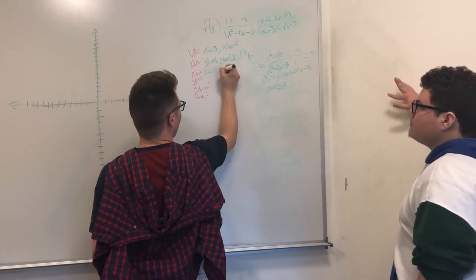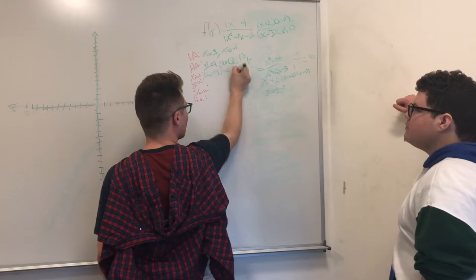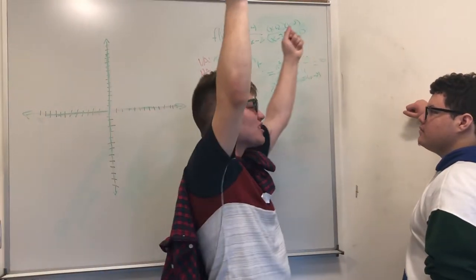So, those are our x-intercepts. 2, 0, and negative 2, 0. Ta-da! Hooray! We found the x-intercepts! We found the zeros!